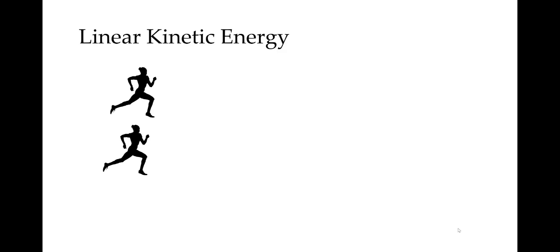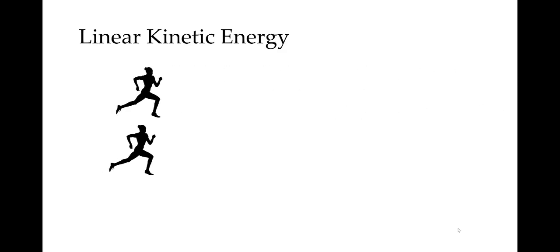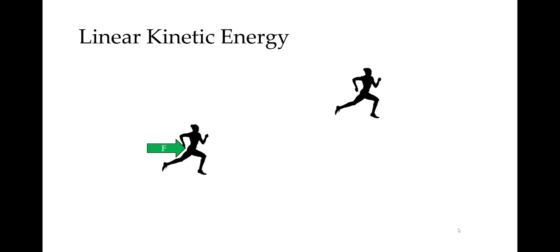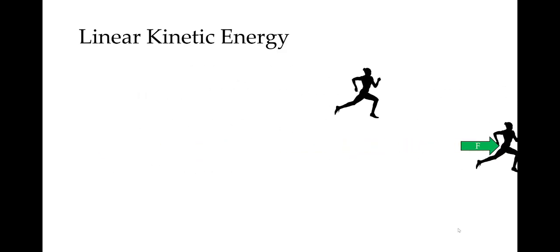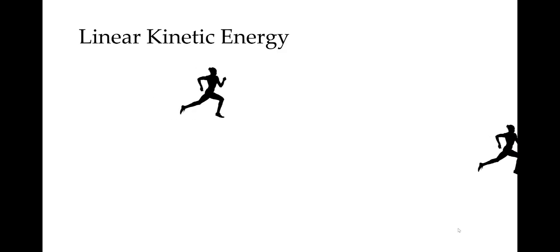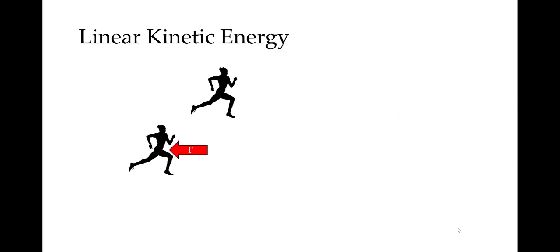For linear kinetic energy, let's return to our runner. In the first scenario, she was running with a certain velocity and then she sped up. The force acting to accelerate her is the same force that increased her kinetic energy—it's just another way of looking at the same phenomenon. A force that causes her to accelerate will increase her velocity, and if we increase the velocity of a body, then we will increase the kinetic energy of that body. The same scenario applies to slowing down. The force acting to decelerate her is the same force that decreased her kinetic energy—a force that causes her to decelerate will decrease her velocity, and if we decrease the velocity of a body, then we will decrease the kinetic energy of that body.